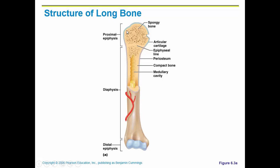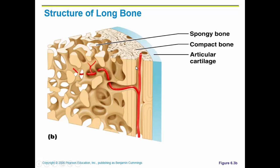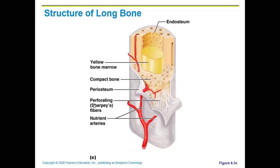On the outside of the long bone you also have connective tissue called periosteum. Here you can see another view of the epiphysis — articular cartilage on the outside, compact bone, and spongy bone on the interior. And another view of the diaphysis shows the compact bone surrounding the medullary cavity with yellow bone marrow, and the periosteum cutaway — the connective tissue that protects and covers the long bone.